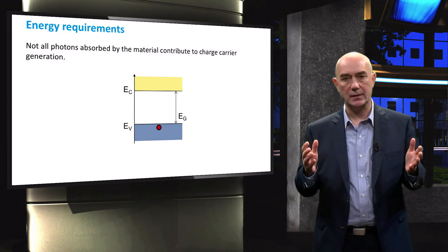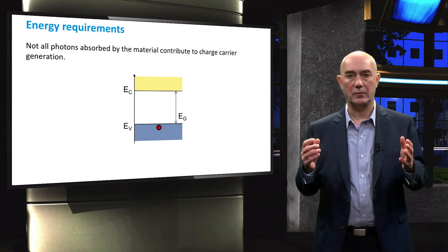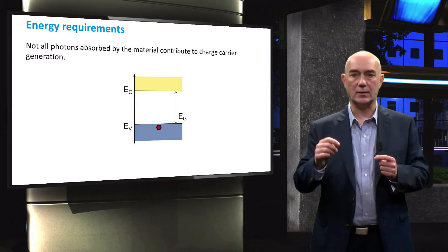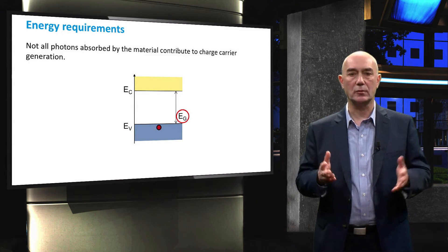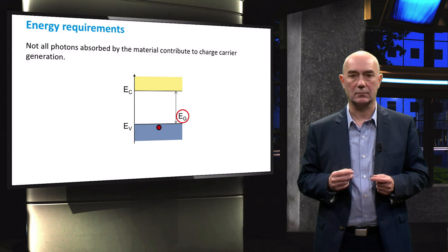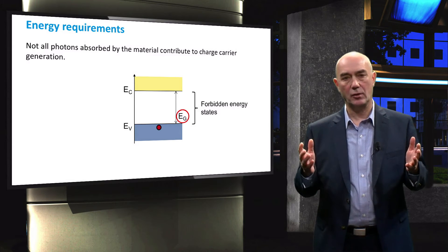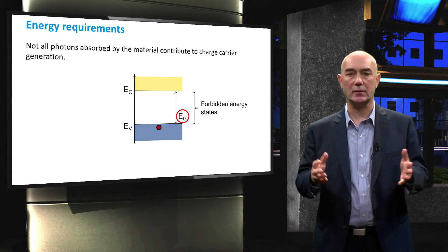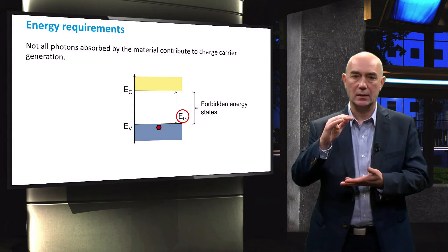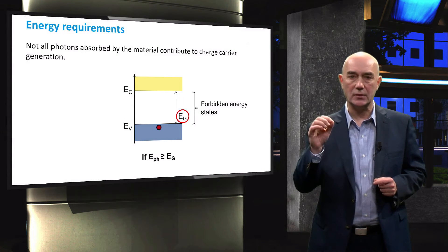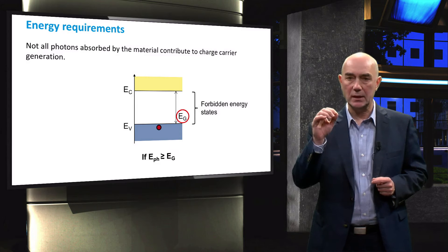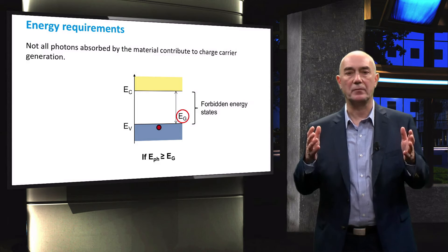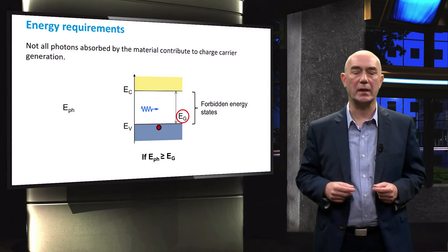However, this excitation does not always happen. Photogeneration is limited by energy constraints. To understand these constraints, we need to look at the band gap energy of a semiconductor. As you recall from our previous video on band diagrams, there are no available energy states for electrons in the band gap. For this reason, only if the photon energy is equal or higher than the energy of the band gap, the photon can be absorbed and an electron-hole pair generated.